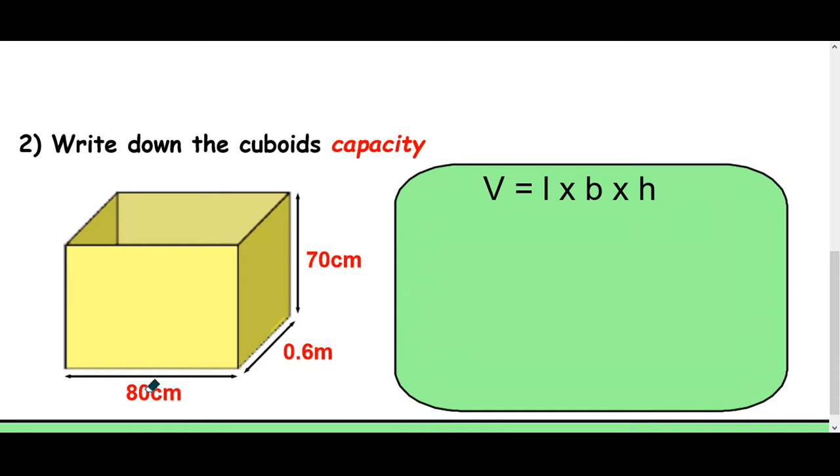So 80 centimeters here is fine. 70 centimeters here is fine. We'll convert this into centimeters. Now, there is 100 centimeters in a meter. So you basically want to times this by 100. So move the decimal point forwards 1 to get 6 and again to get 60. So that's really 60 centimeters, which makes more sense with 70, 60 and 80.